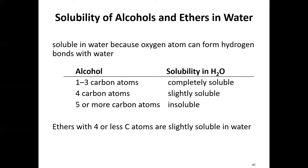For solubility, alcohols of one to three carbons are completely soluble in water — ethanol, the drinkable alcohol, is soluble and mixes with water completely. Four carbons is slightly soluble, and anything above five is insoluble. A pentanol is insoluble because it's so big and bulky with five carbons that the OH group alone isn't enough to make it soluble — there isn't sufficient hydrogen bonding.